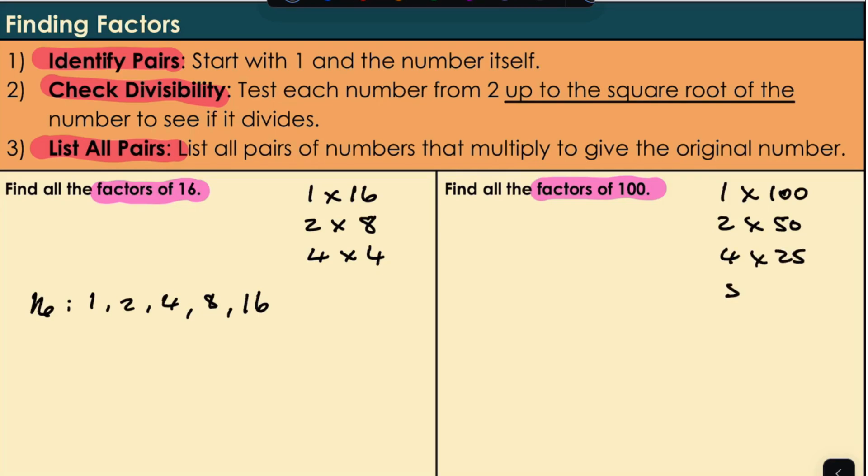5? Yes. 6? No. 7? No. 8? Does 8 go into 100? No, it doesn't. 9? 10? Yes. 10 is the square root of 100. We don't need to go any further. All of these factor pairs include factors of 100.